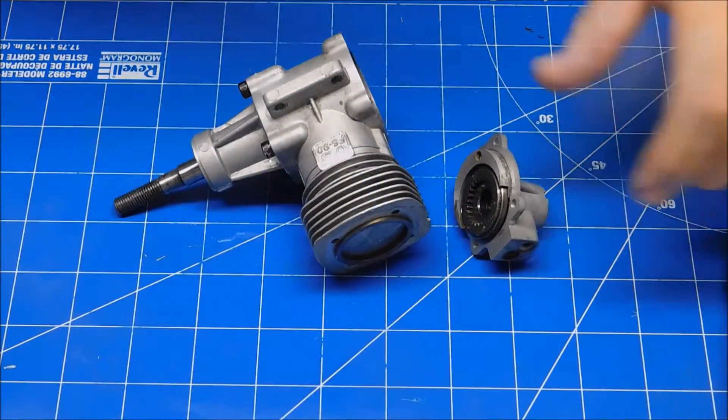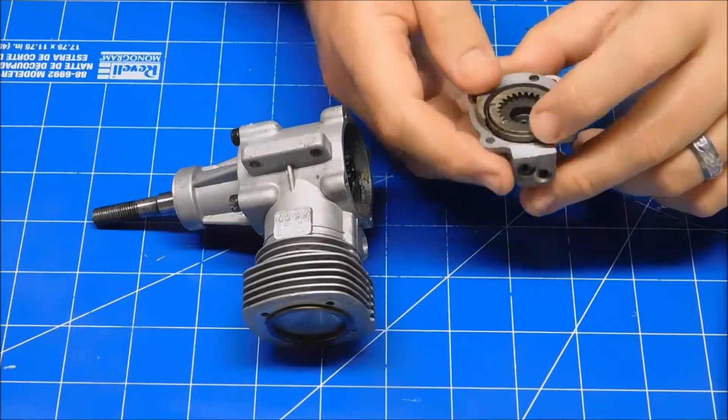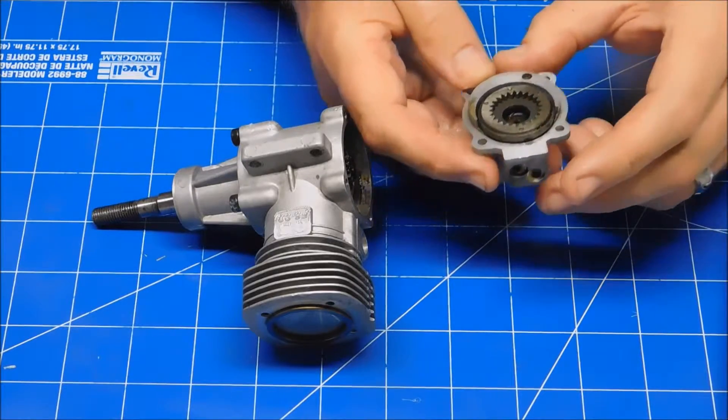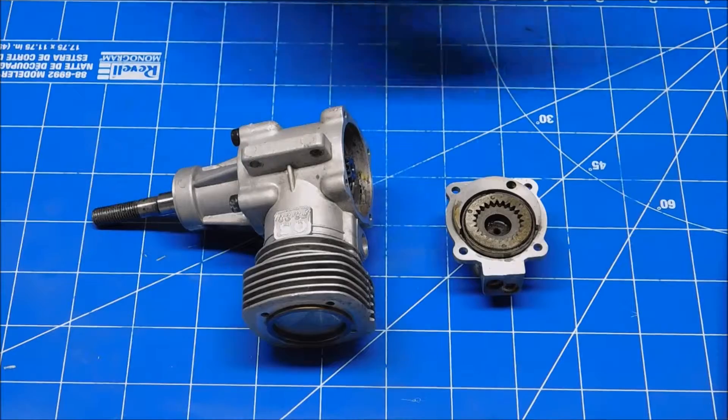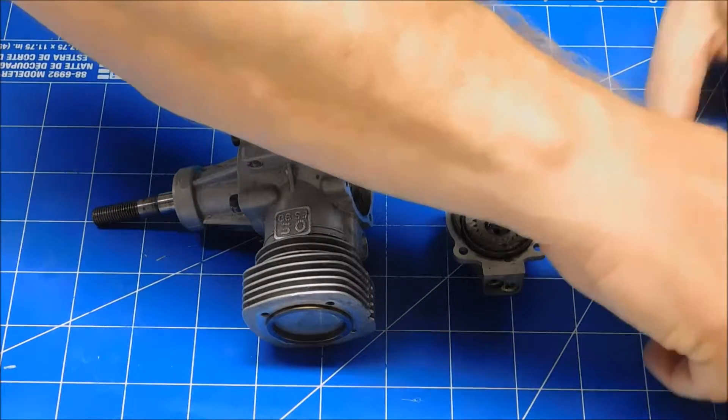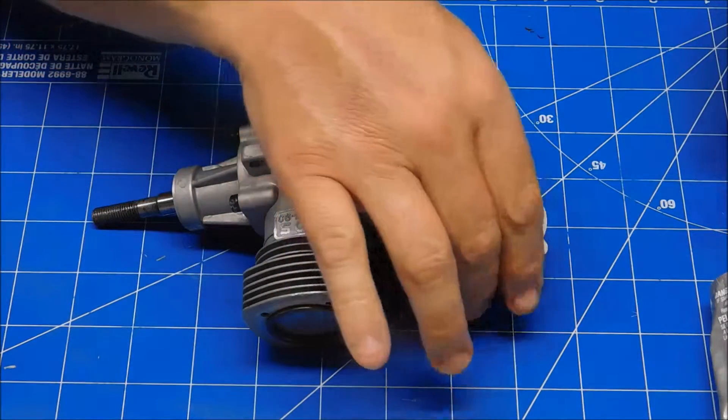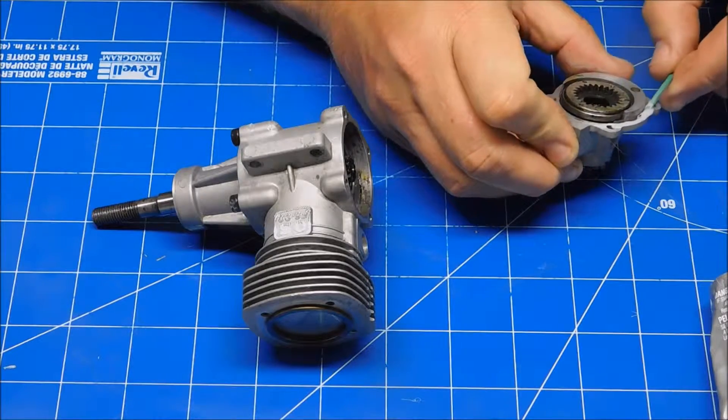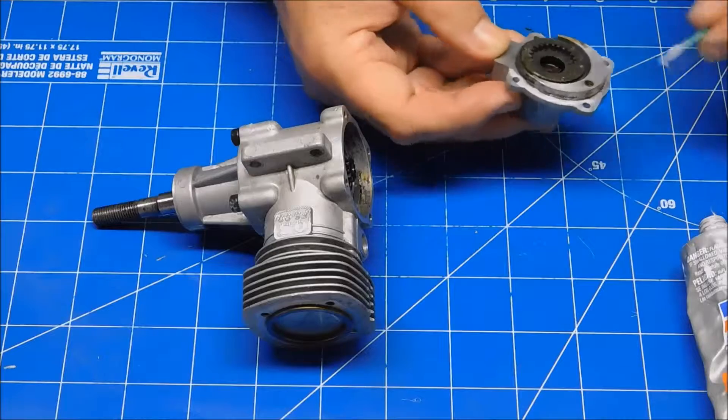So believe it or not, I actually referred to one of my older videos on how to set the timing and I had found that putting this timing dot at the bottom was probably the best thing to do. So what I'm going to do here real quick is I'm going to put some of this Permatex motor seal on this, and seal, create my new seal or gasket for this, being very careful not to get any on that gear that's exposed there.